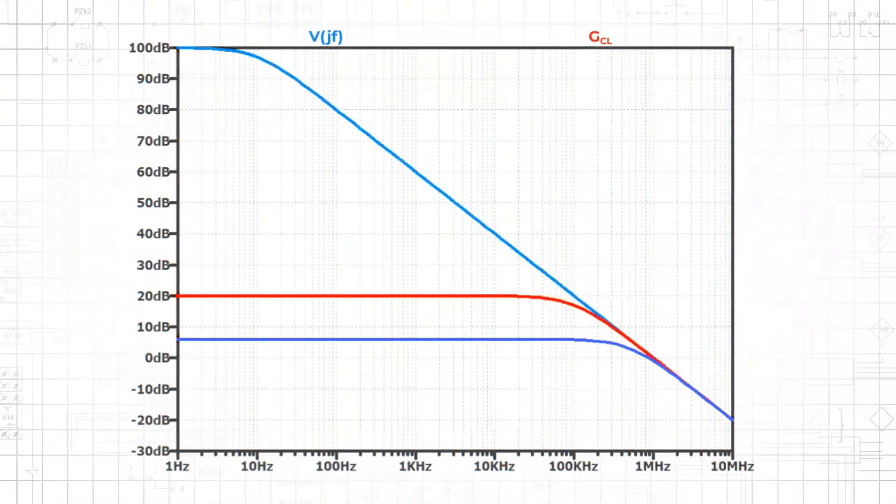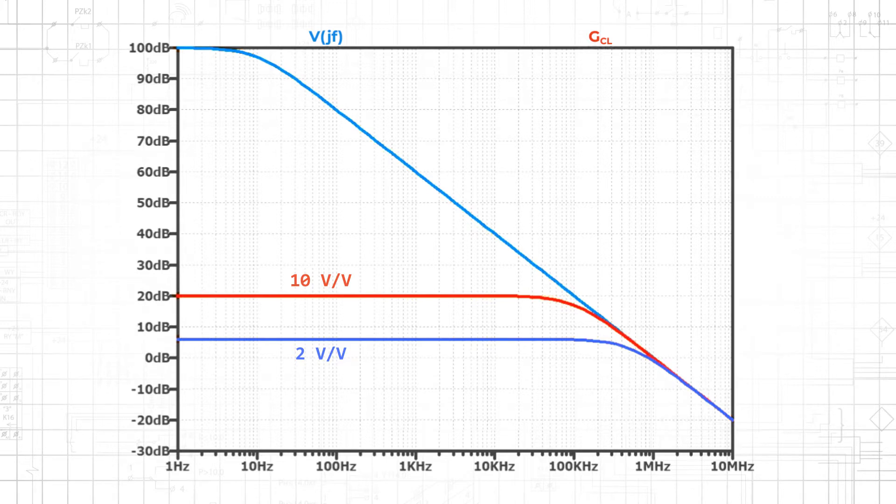If we increase the closed-loop gain to 10 volts per volt, the curve representing closed-loop gain will approach the curve representing open-loop gain at a lower frequency. In other words, the closed-loop bandwidth will be narrower.